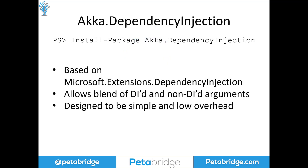In the early days of Akka.NET, we launched a library called akka.di.core, which had packages specific to every dependency injection container that users might want to use. We've since deprecated those packages, and instead what we're recommending for dependency injection is that you install the akka.dependency injection NuGet package. This is based on top of Microsoft.Extensions.DependencyInjection, which is the library that ASP.NET Core and all other Microsoft templates use for instrumenting DI.